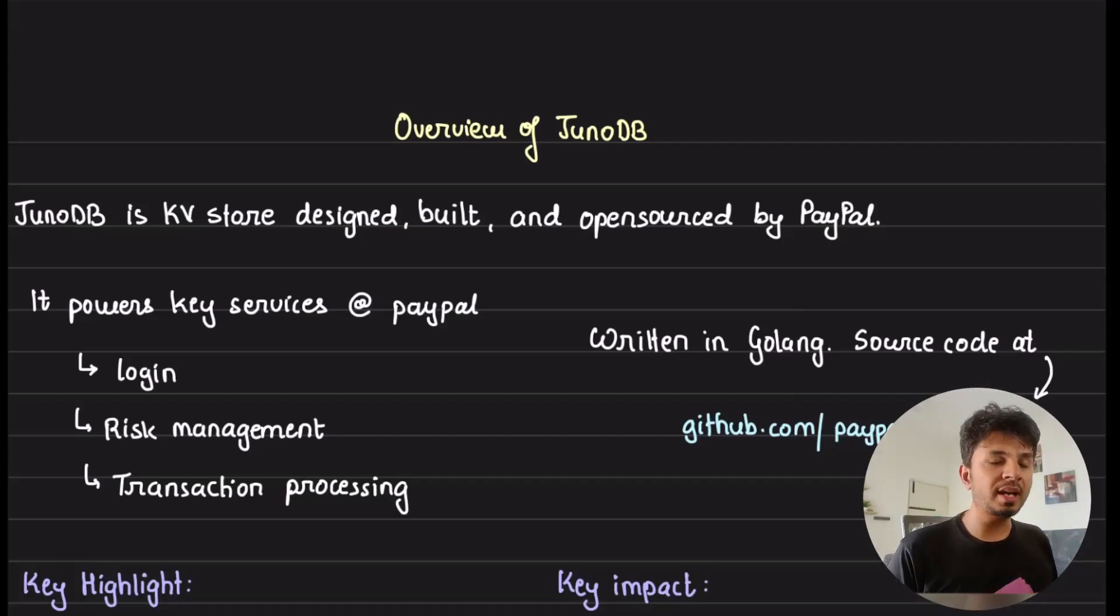In the process, we will understand the internals of JunoDB and how a production-grade key-value store is built. This is the first video of the series, and in this one I will be giving you an overview of the database, how it differs from Redis, and at the end we will talk about an interesting problem called latency bridging and how JunoDB solves it for PayPal.